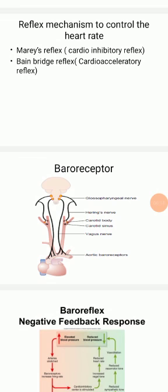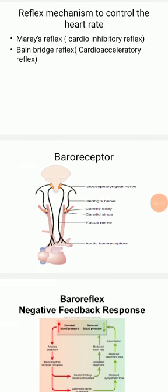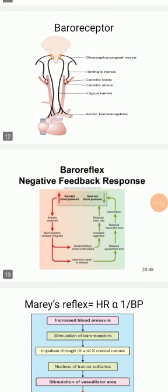Before understanding Marey's reflex, you should understand the baroreceptor mechanism. Baroreceptors are pressure receptors situated in the arch of the aorta and the carotid body. Impulses from these receptors are carried by the vagus and Hering's nerve and finally by the glossopharyngeal nerve to the vasomotor center. These receptors are stimulated whenever there is a change in pressure.